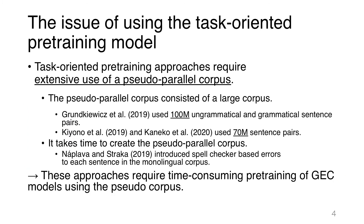The task-oriented pre-training achieves strong GEC results. However, this approach has an issue: these task-oriented pre-training approaches require extensive use of pseudo-parallel corpora. Specifically, Kiyono et al. and Kaneko et al. use 17 million sentence pairs, and it takes considerable time to create the pseudo-parallel corpus.